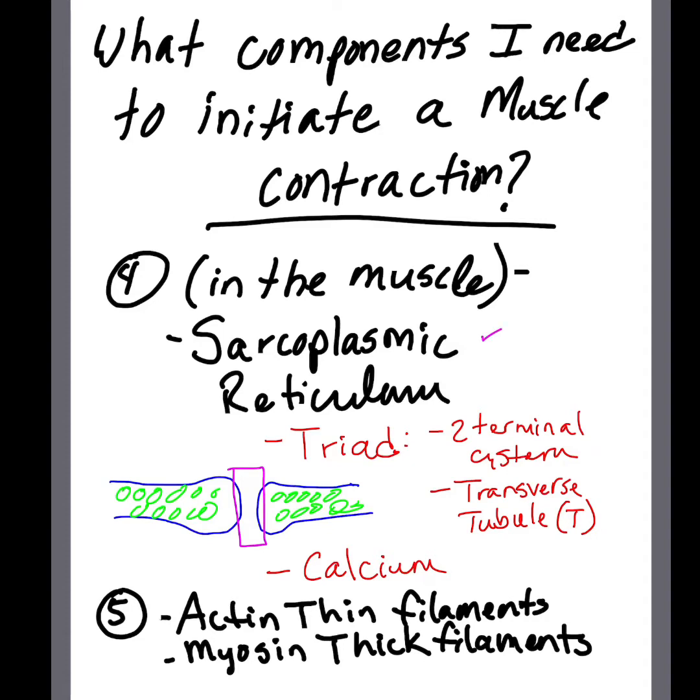Within the muscle we're also going to be needing the sarcoplasmic reticulum, which is also known as the endoplasmic reticulum. Within the sarcoplasmic reticulum there is a triad which consists of two terminal cisterns and a transverse T tubule. And we're also going to be needing calcium.